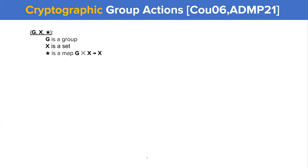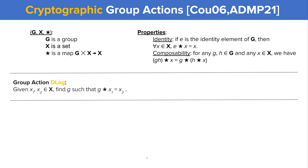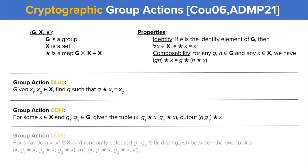Let's start by recalling some basics of cryptographic group actions. A group action is a tuple of a group, a set, and a mapping that satisfies the identity and composability properties, where composability is analogous to associativity in groups. To make group actions cryptographic, we endow them with straightforward hardness assumptions — the discrete log, CDH, and DDH assumptions over group actions — and if you're familiar with how these work over groups, the intuition carries over in a straightforward manner.